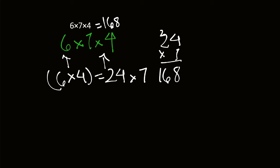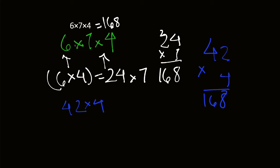We could also group 6 and 7. 6 times 7 would be 42. 42 times 4 is also 168. If we work that out: 8, then 4 times 4 is 16, so 168 again. That shows that the associative property does work. Let's move on to some problems now.